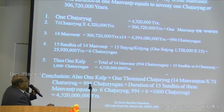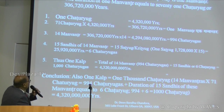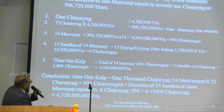One Kalp — that is 14 Manvantaras — gives 994 Chatur Yugas, plus 15 Sandis or six Chatur Yugas, becoming a total of 1000 Chatur Yugas to make one day or one Kalp. One Kalp equals 1000 Chatur Yugas.